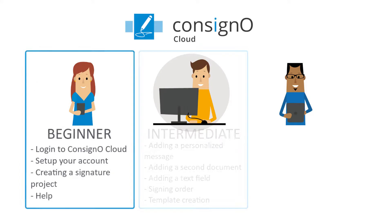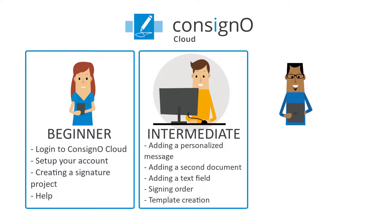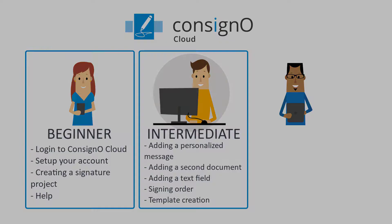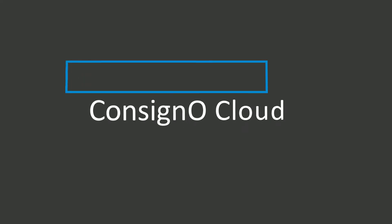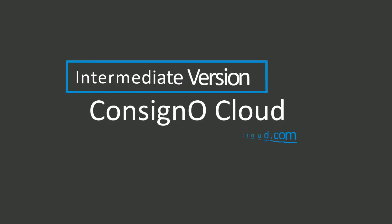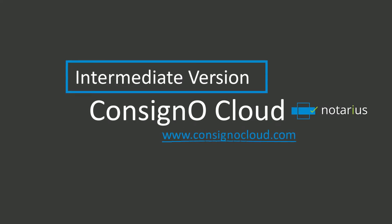This concludes our intermediate level of the ConsignoCloud video. We covered adding a custom message, text fields, as well as adding documents to projects. We also learned how to define the signing order and finally how to create and use a template. Thank you for watching this video and we hope you found it useful.